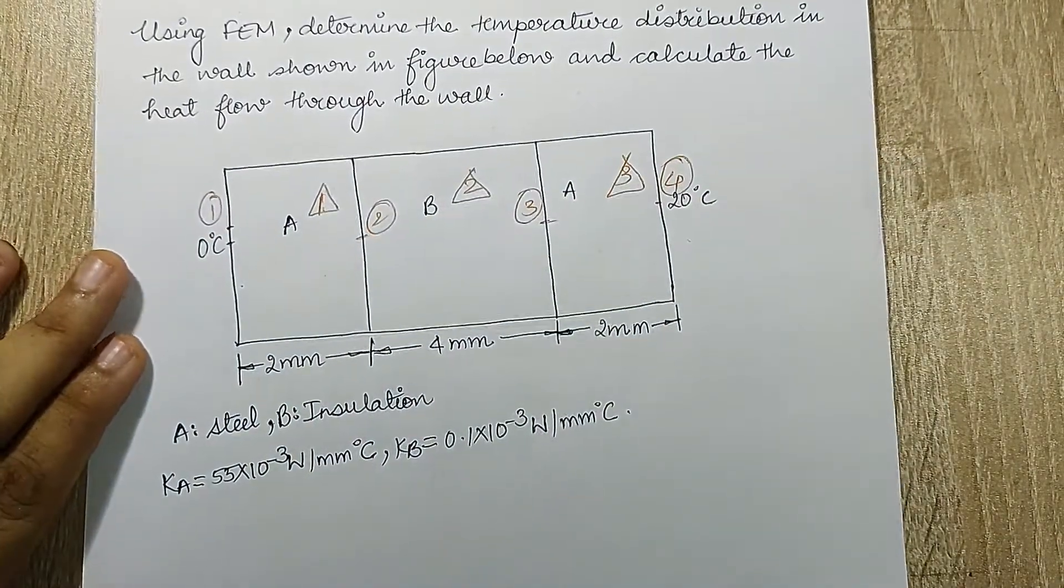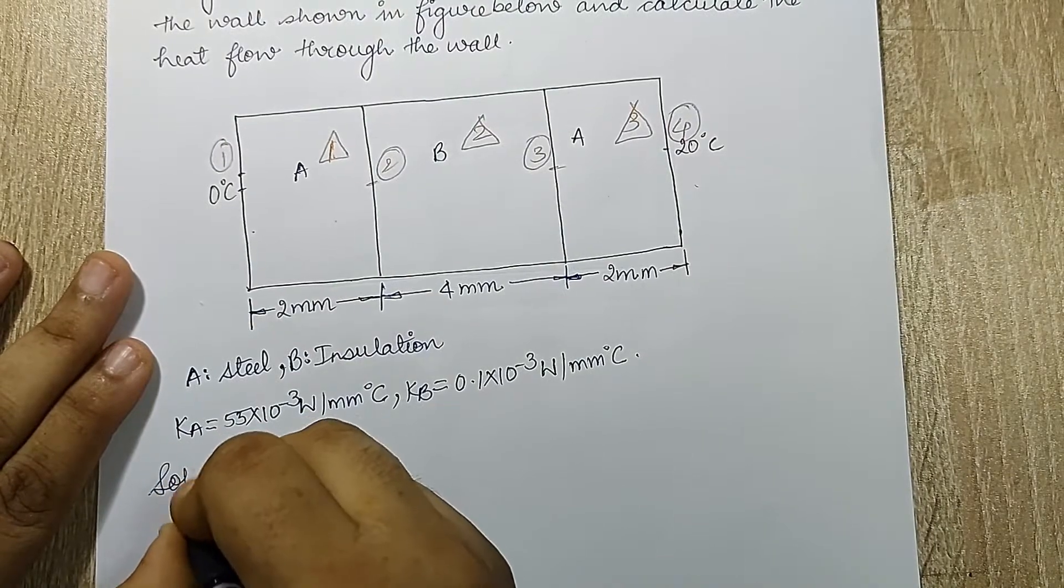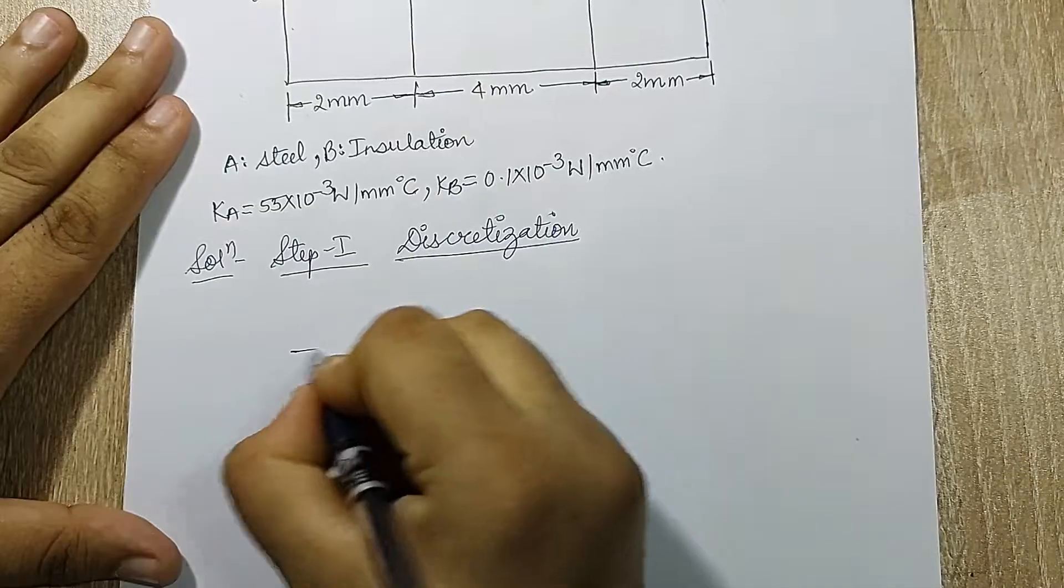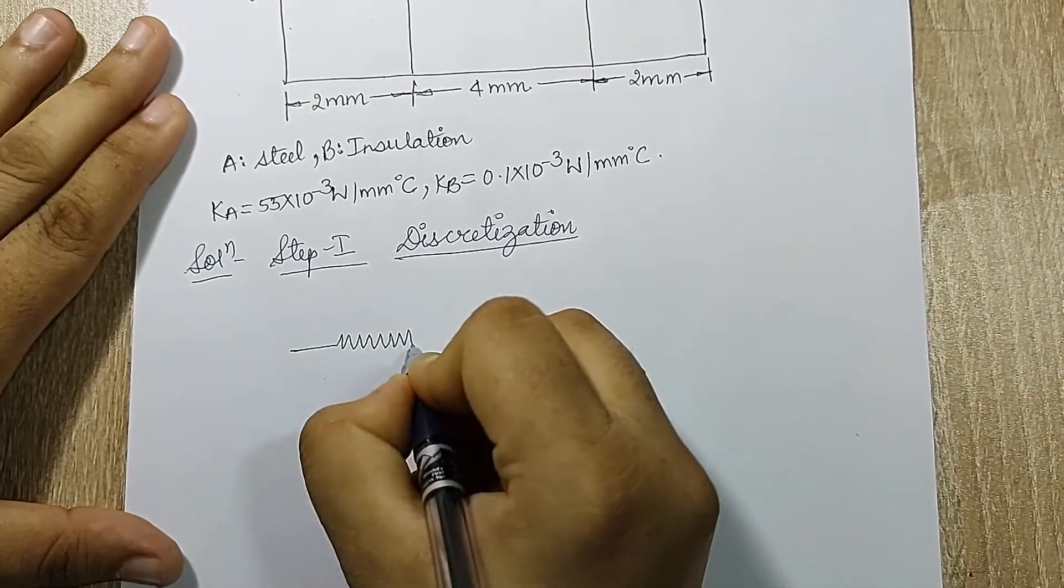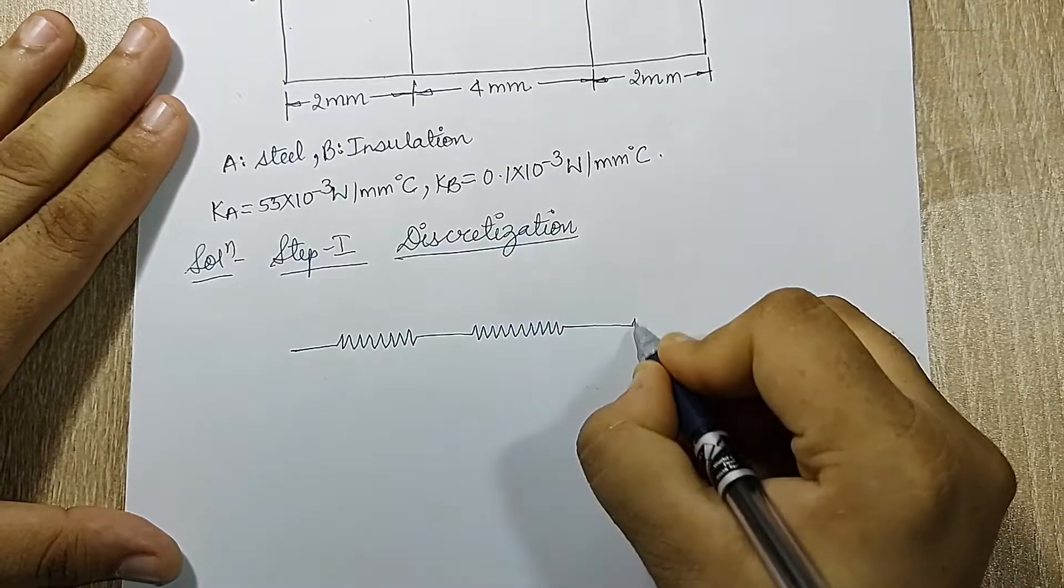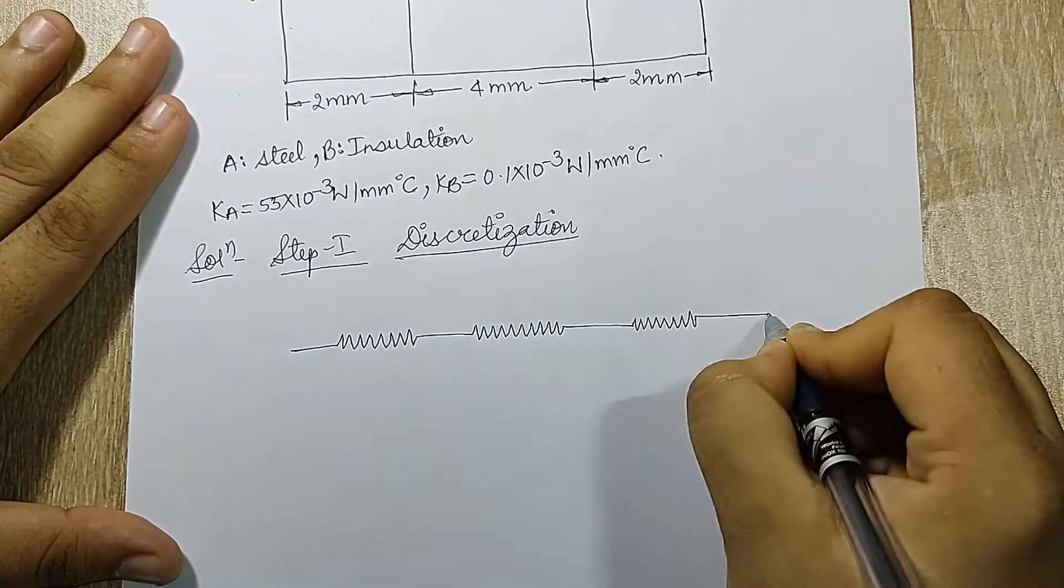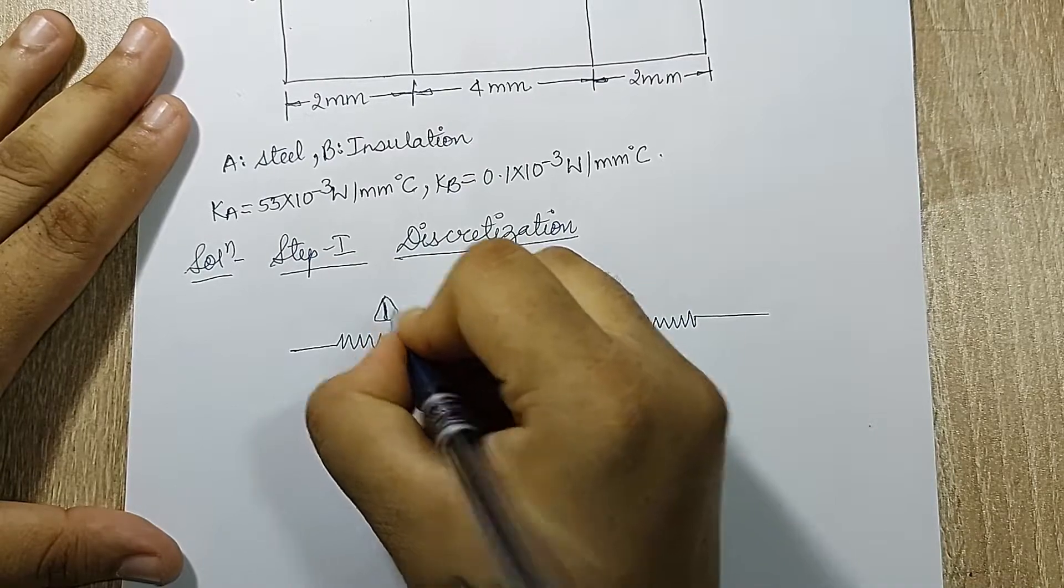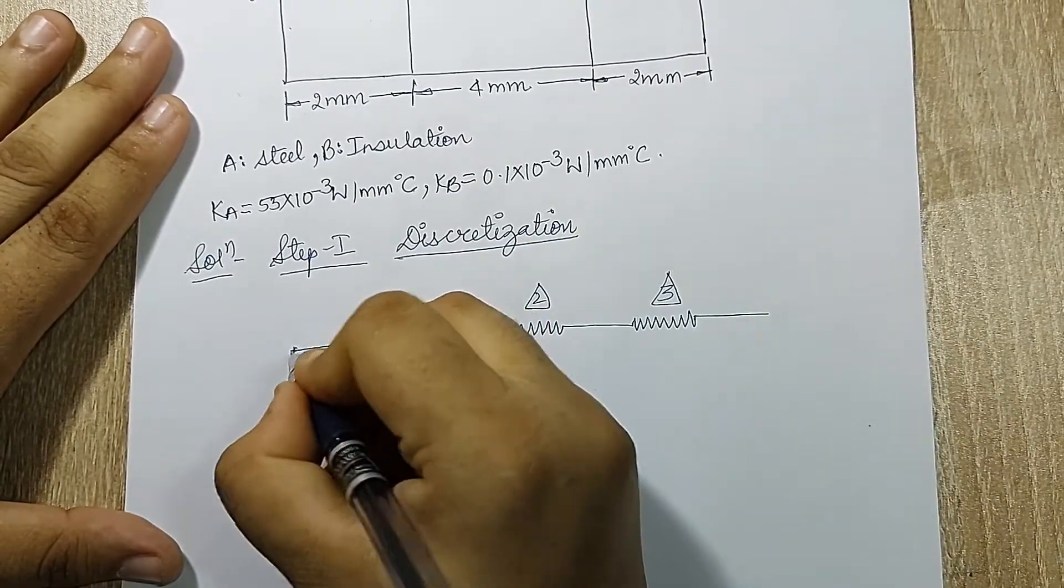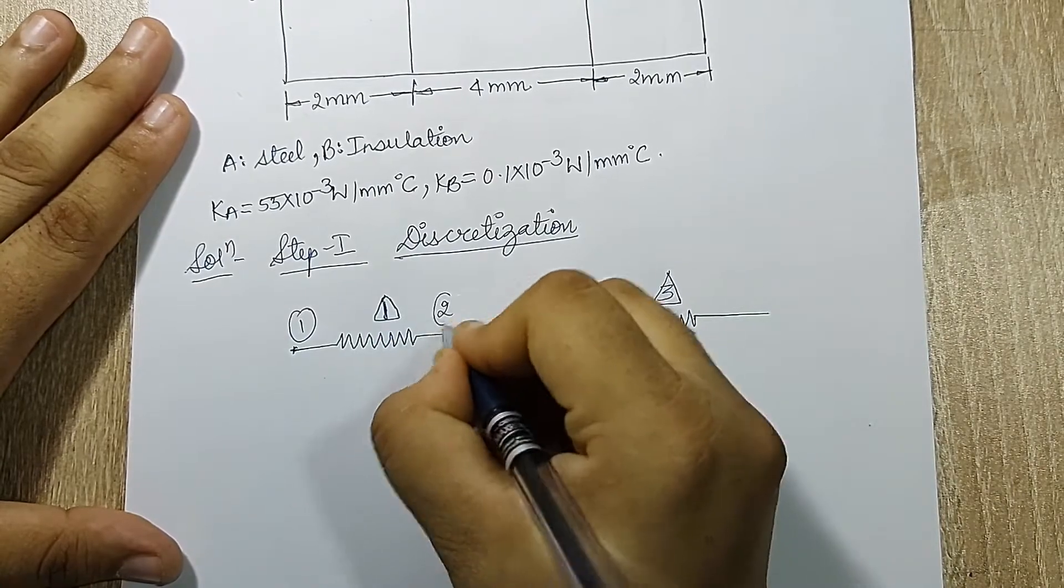When I start the solution, I will first draw the discretization diagram which is my step 1. This is my element 1, element 2, and element 3. 1 is between node 1-2, 2 is between 2-3, and 3 is between 3-4.